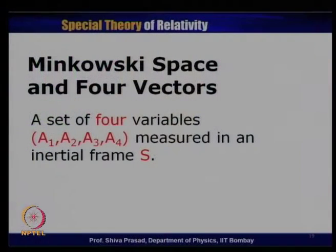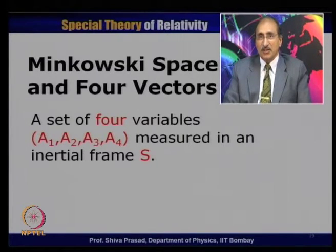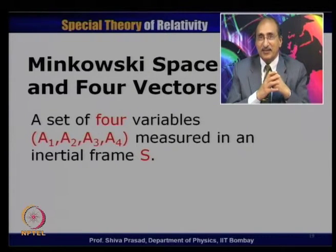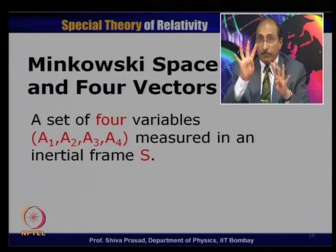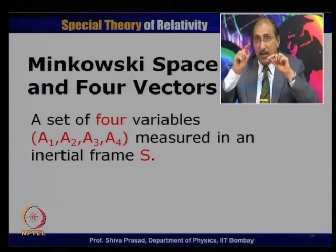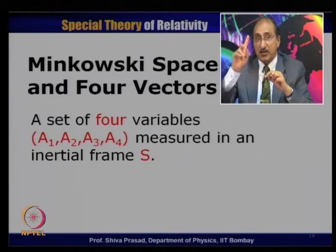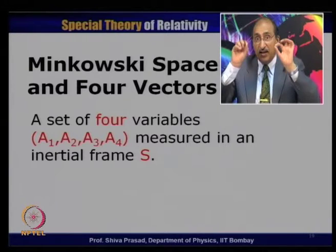Now let us extend this idea to four-dimensional space, generally called Minkowski space. In this space, a vector is described by not three components but four components — that is why it is called a four vector. A traditional vector is described by three components. A four vector has components a1, a2, a3, a4, which are measured in a given frame of reference S.